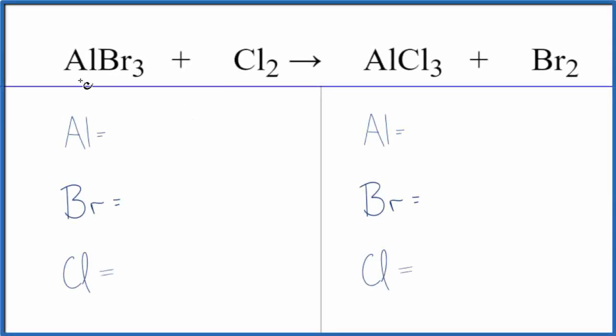In this video, we'll balance the equation for AlBr3 plus Cl2. This is aluminum bromide plus chlorine gas.